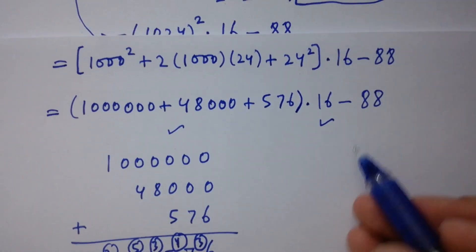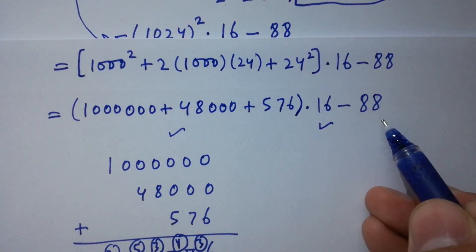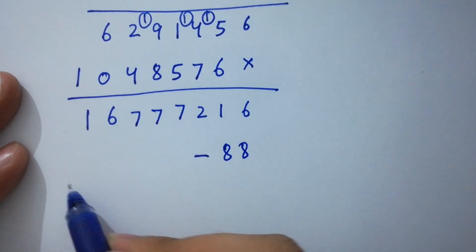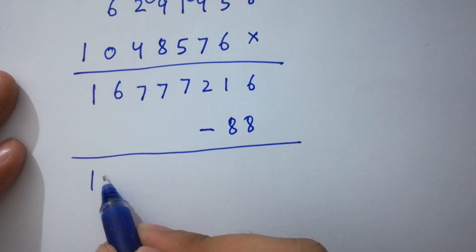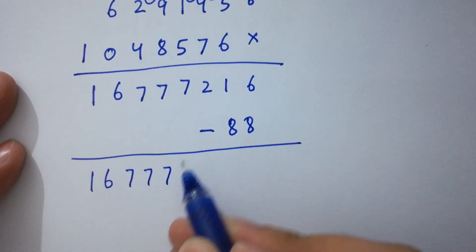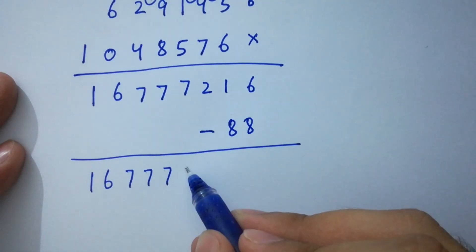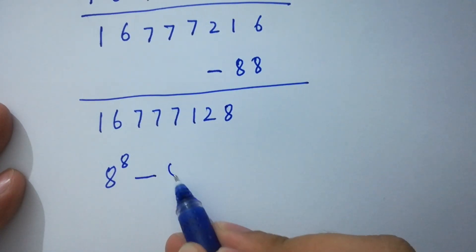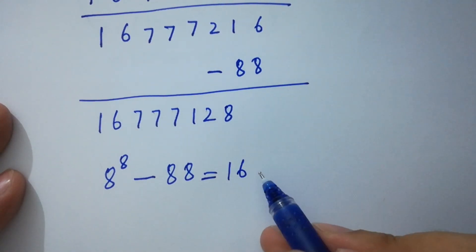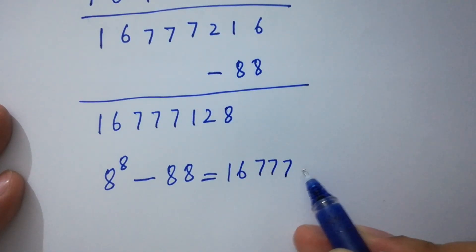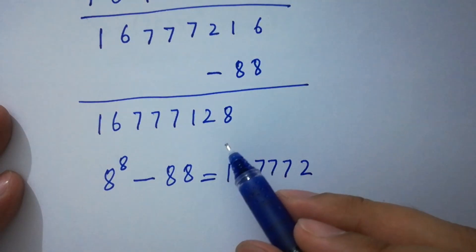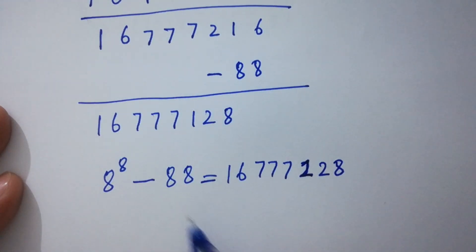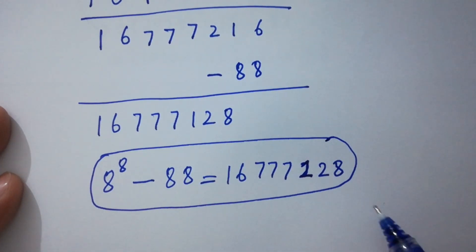In the last step, we subtract 88. So 16,777,216 minus 88 equals 16,777,128. Finally, 8 to the power 8 minus 88 equals 16,777,128. This is our final answer without a calculator.